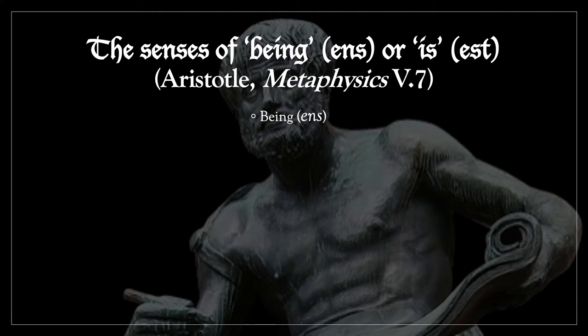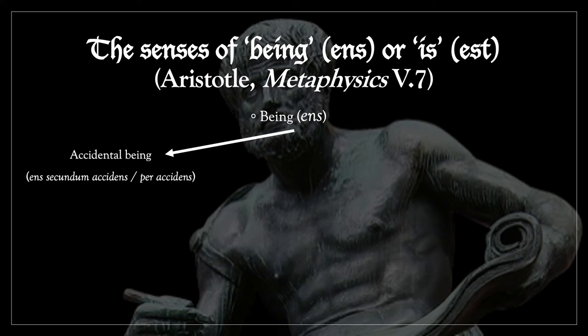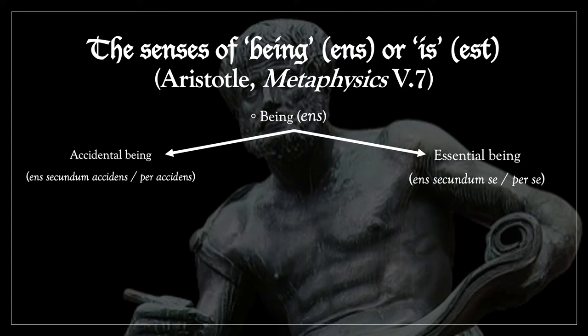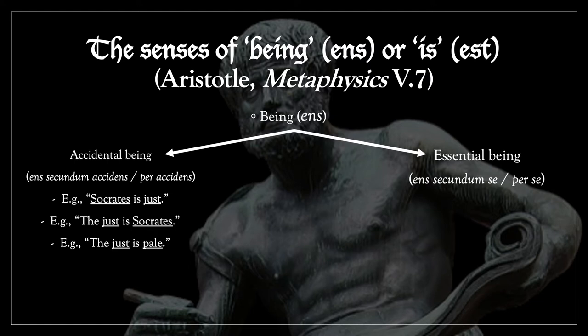Aristotle says that being, or 'ens', can either mean accidental being — which in Latin is called 'in secundum accidens' or 'ens per accidens' — or being might mean essential being, that is 'in secundum se' or 'ens per se'. Accidental being is what is expressed by the word 'is' in sentences like 'Socrates is just', or 'the just is Socrates', meaning the just person is Socrates, or 'the just is pale', meaning the just person is pale because Socrates is pale.